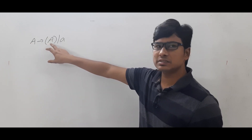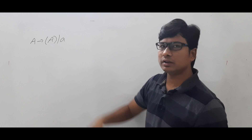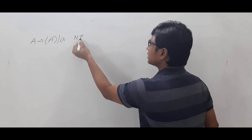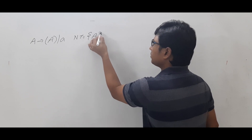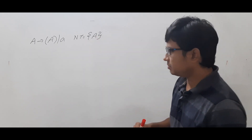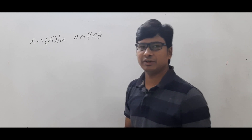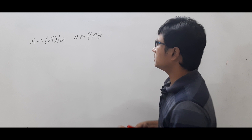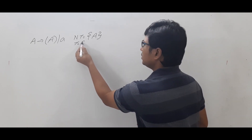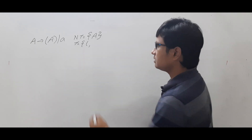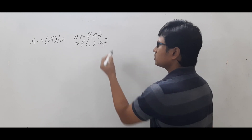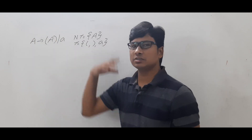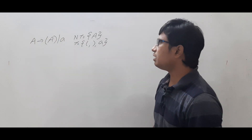The grammar given is: A → (A) | a. What are the non-terminals? The non-terminals are only capital A, because the symbols on the left-hand side of every production are the non-terminals. The terminals are open braces, closed braces, and small 'a' — so these are the three terminals. The start symbol is A itself.